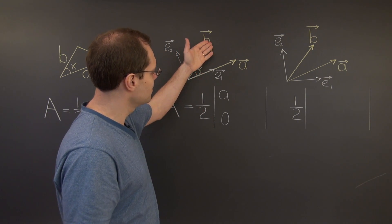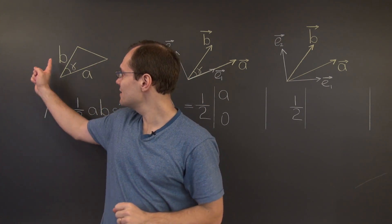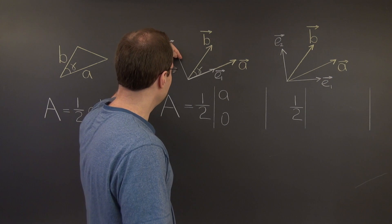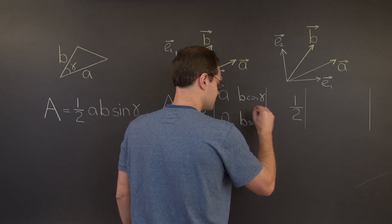And the second column consists of the components of the vector B, which are of course B cosine gamma and B sine gamma.